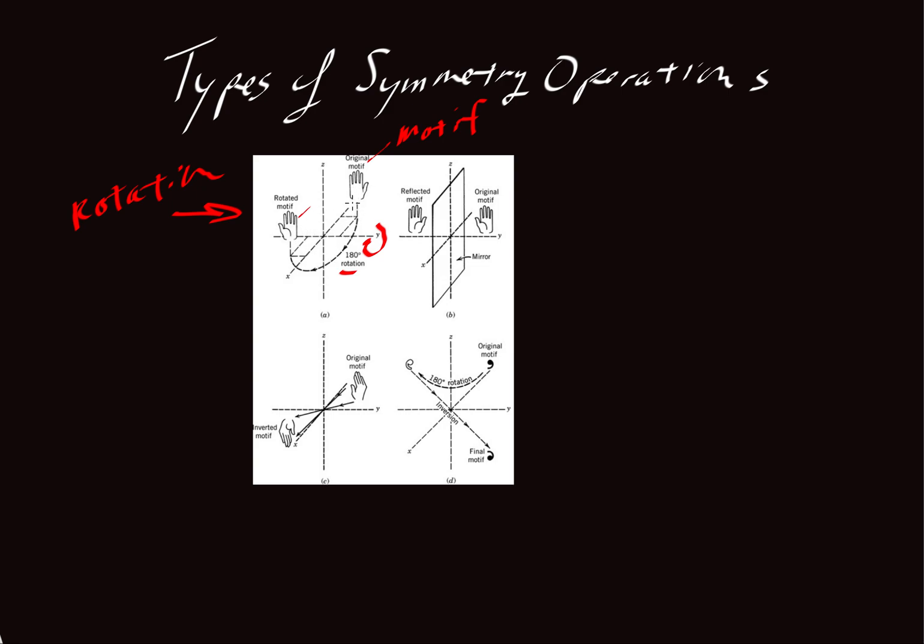So this is an example of a rotational axis of symmetry. In this case the rotational axis is the y-axis here.